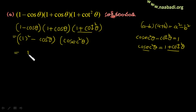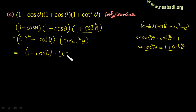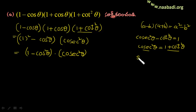So we have 1 minus cos squared theta, into cos squared theta. Now, 1 minus cos squared theta is equal to sin squared theta. And sin squared theta plus cos squared theta is equal to 1.